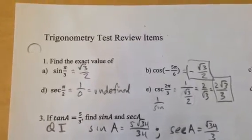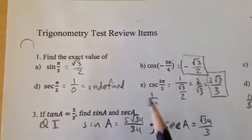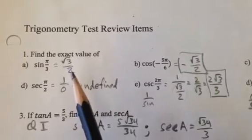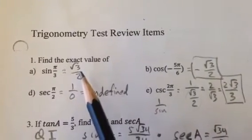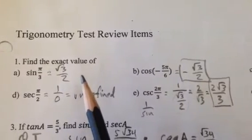Okie dokie, here comes the trigonometry test review solutions video. First group of problems is just naming some exact values for some trig functions there. Sine of 5pi/3 equals root 3 over 2. Remember we're using exact values, rationalized denominators, no calculators.